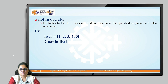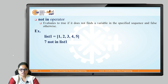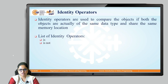The next operator is 'not in', which evaluates to true if the given value is not present in the sequence, otherwise it returns false. For example, '7 not in list1' — since 7 is not present, it results in true. If we write '3 not in list1', since 3 is present, it results in false.